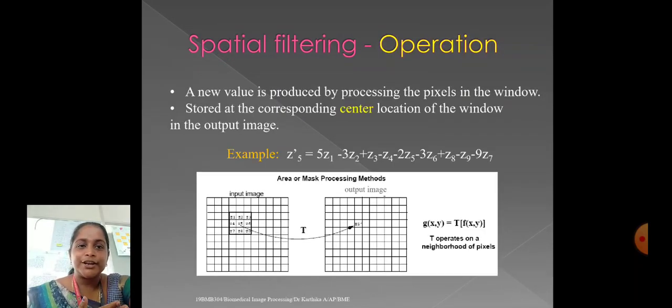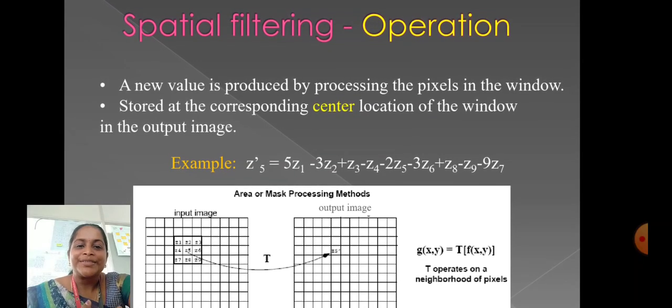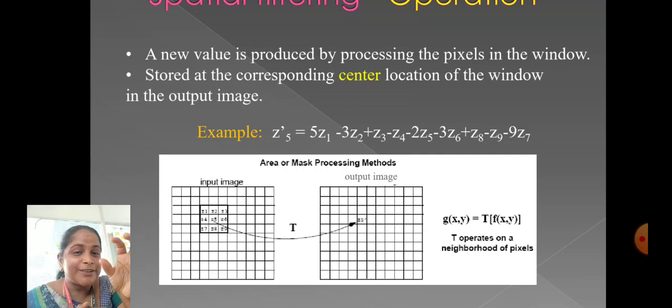Spatial Filtering Operation and new values are produced by processing the pixels in the window. It is stored at the corresponding center location of the window in the input image. For example, Z5' equals 5Z1 minus 3Z2 plus Z3 minus Z4 minus Z5 minus Z6 plus Z8 minus Z9 minus Z7. In this example, it will be the input image or the required input component, it will be stored at the corresponding center of the location.